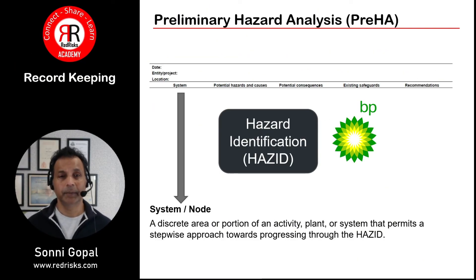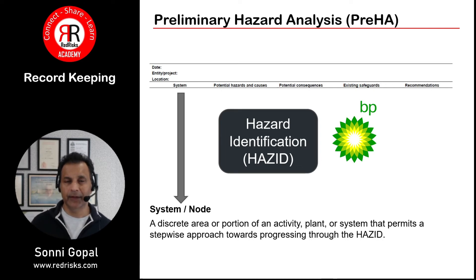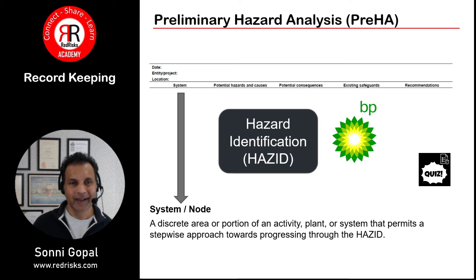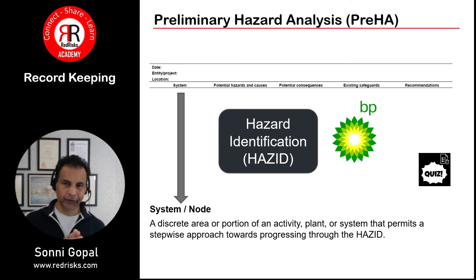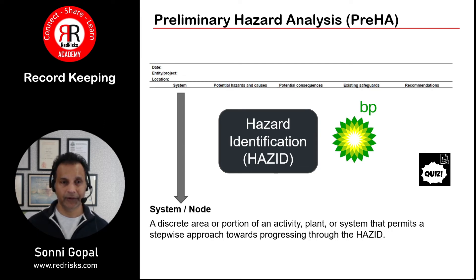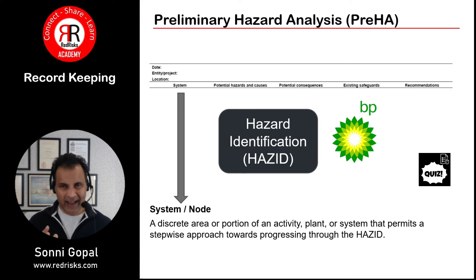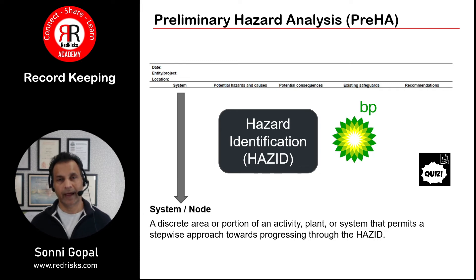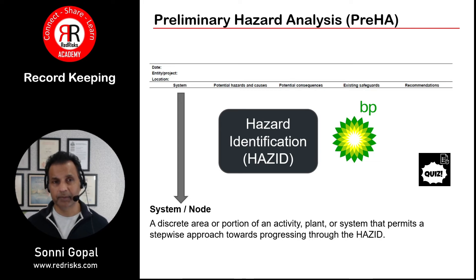This is an example of a record keeping process in BP. I've gone towards calling it 'hazard' because in the areas that I'm involved, we focus on hazard — you can call it pre-haz or whatever, but hazard is easy to say. Fundamentally, we look at systems, potential causes, mitigation measures, and existing safeguards. The system or node is an important definition used in HAZOPs and risk assessments — it's a discrete area or portion of an activity, plant, or system that permits a stepwise approach through the hazard or pre-haz.